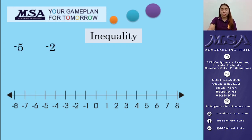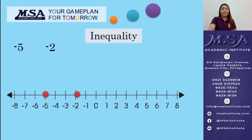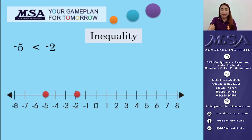So, let's have the first one: negative 5 and negative 2. Let's try to plot them on the number line. Negative 5 is there and negative 2 is there. As you can see, negative 5 is located on the left side of negative 2, and that means negative 5 is smaller than negative 2. So, we will use the inequality symbol less than: negative 5 is less than negative 2.